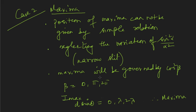We now understand that for minima, either of the two factors being zero gives a minimum; for maxima we use a small approximation neglecting slit width variation. We will now take a special case for the relation between d and e and try to represent graphically the Fraunhofer diffraction due to double slits. We'll see that in the next lecture.